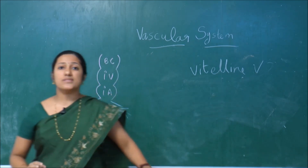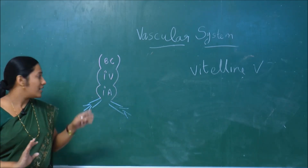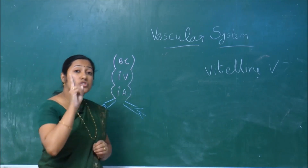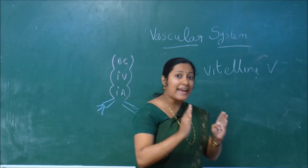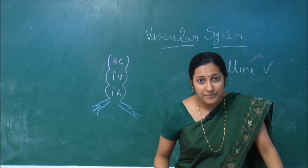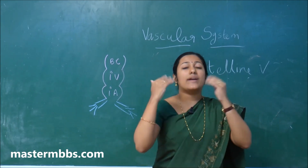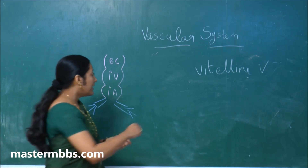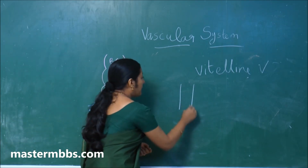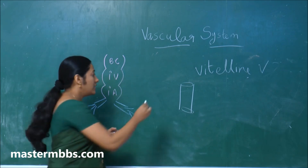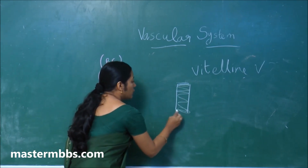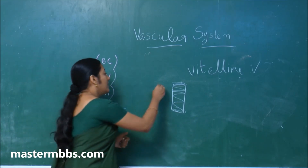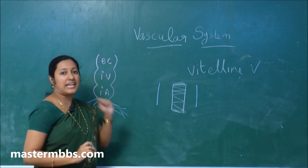The sinus venosus in the heart tube has two horns — the right horn and the left horn. There are two vitelline veins: the right vitelline vein and the left vitelline vein. According to the developing gut and the developing duodenum, on either side of the duodenum there is the right and the left vitelline vein.